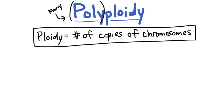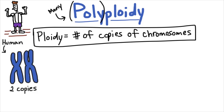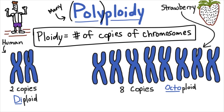For example, humans have two copies of every chromosome — they get one from mom and one from dad, so we are considered to be diploid, di meaning two. But strawberries have eight copies of every chromosome, which makes them octoploid, octo meaning eight. They get four copies of every chromosome from each parent.